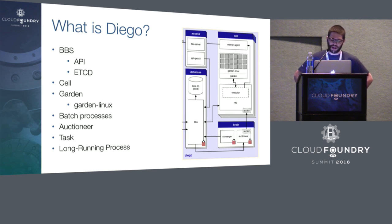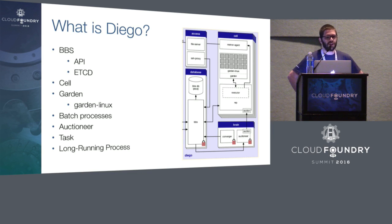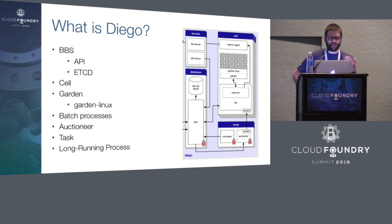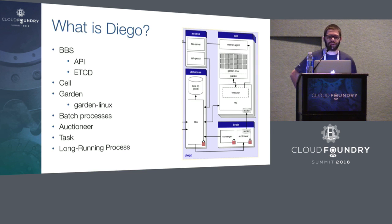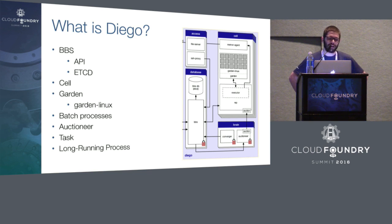Another component is the cell. The cell is ultimately where all the containers are run — it is the capacity of a Diego cluster. Simply put, the more cells we can manage, the more containers we're going to be able to run. The cell itself is composed of a few components, one of which is Garden. Garden is the successor to Warden, the Cloud Foundry container technology, and is a platform-agnostic API to expose container and process management. Implementations supported today include Garden Linux, Garden Windows, and coming soon, Garden RunC. The one we're using in production and used for these performance tests is Garden Linux.